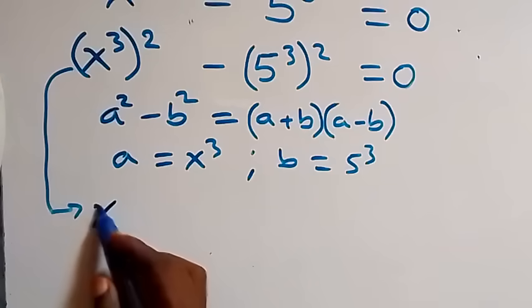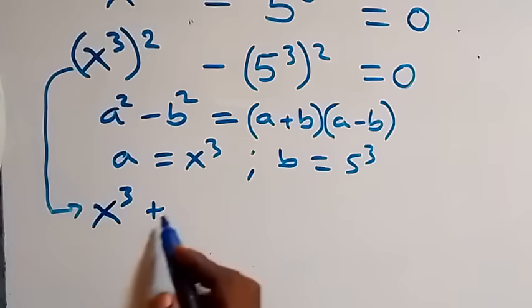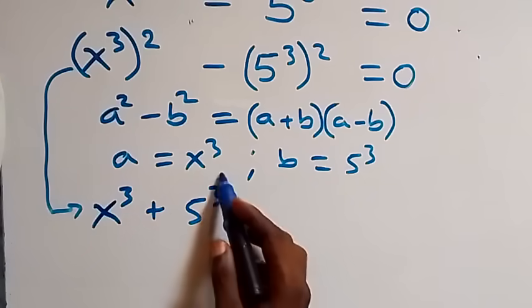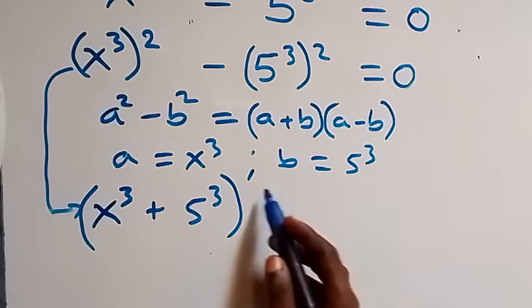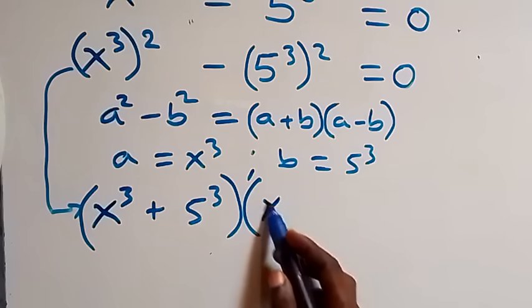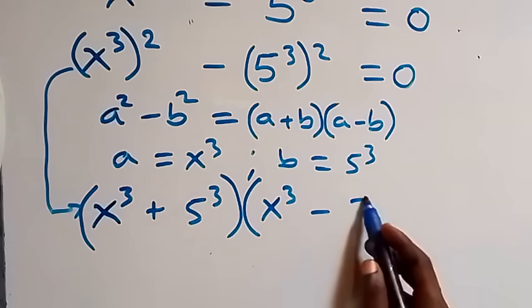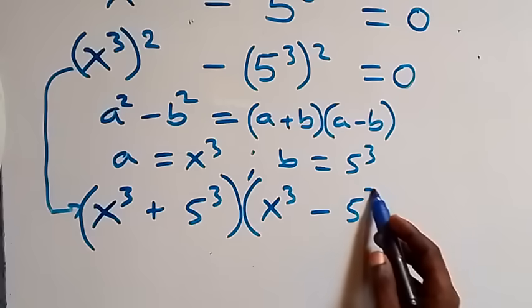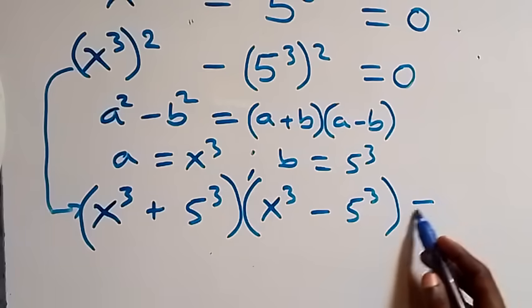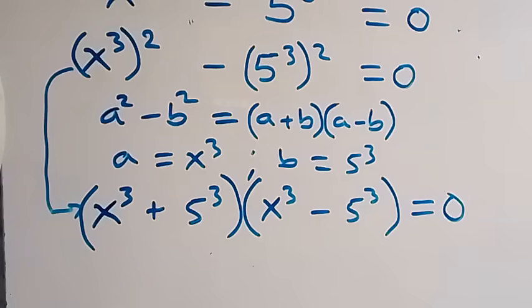Applying that, what we have becomes: (x³ + 5³) times (x³ − 5³) equals 0.